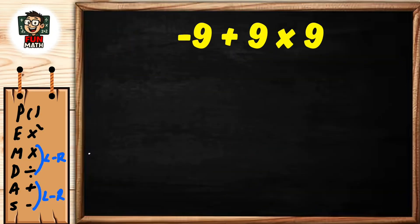Here is addition and multiplication. First, we do multiplication. 9 times 9 equals 81.